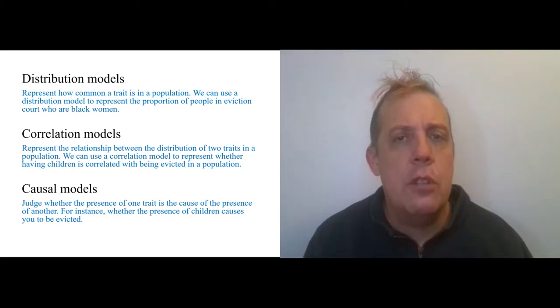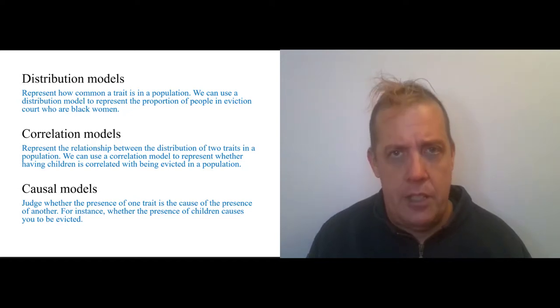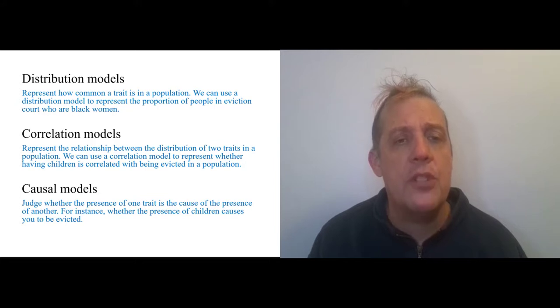This involves two quantified categorical statements. One describes the percentage of families that have children, or households that have children. The other describes the percent of households that are evicted or have a forced move. The correlation is a relationship between those two percentages.